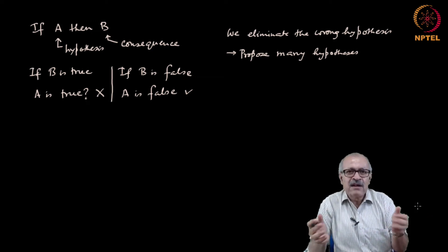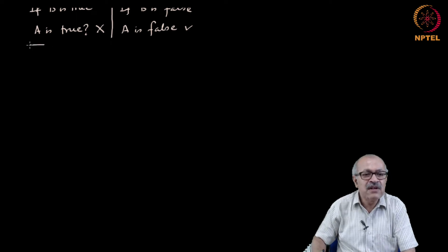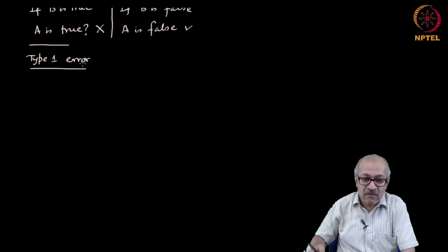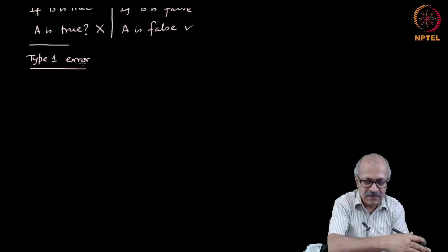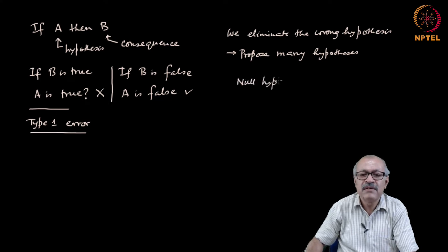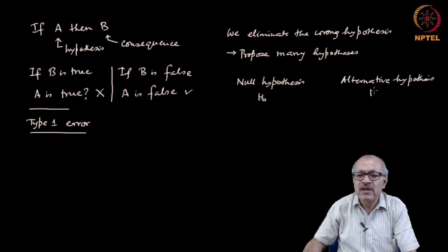What kinds of errors can one commit? There are mainly two types of errors. The first is called a Type 1 error. Every hypothesis has its opposite — the null hypothesis. There will always be a null hypothesis and an alternative hypothesis. The null hypothesis is often denoted as H₀ and the alternative as H₁.